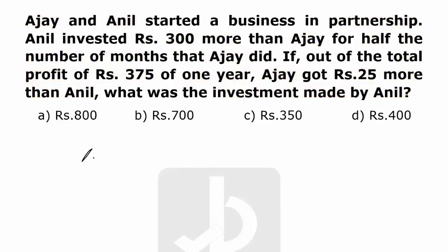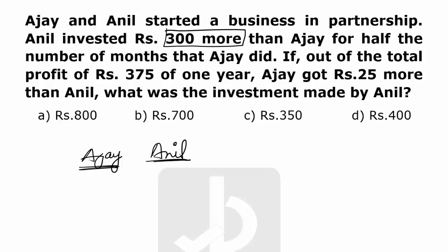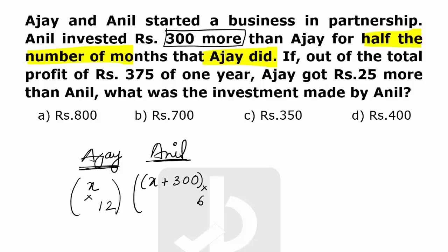Anil has invested 300 more than Ajay. Let the amount invested by Ajay be X, so Anil's investment is X plus 300. For the time period, let Ajay have invested for 12 months, so Anil invested for 6 months — half of Ajay's duration. The ratio of their profit is based on these values.